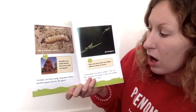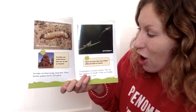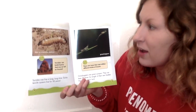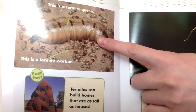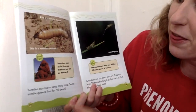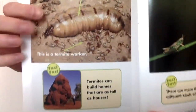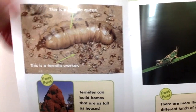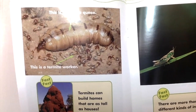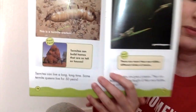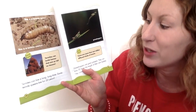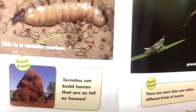Termites can live a long, long time. Some termite queens live for 50 years. Up here we have a picture — this is a termite queen. And this is a termite worker. If you see the queen, this long thing is the whole termite queen, and all these little guys around them are the termite workers. Here's our fast fact: termites can build homes that are as tall as houses.